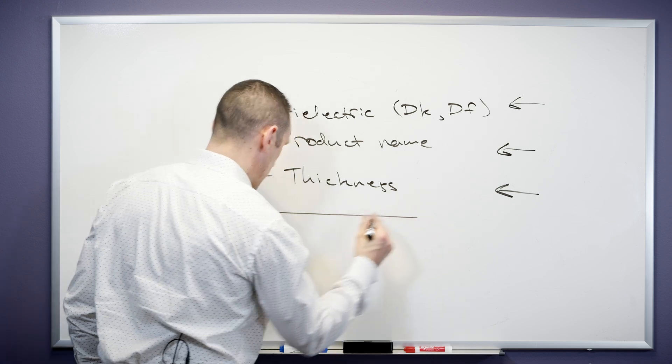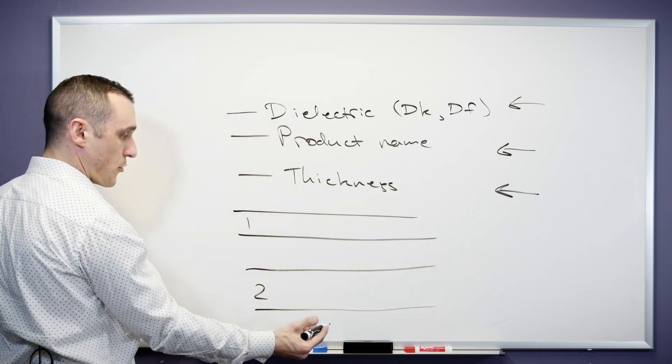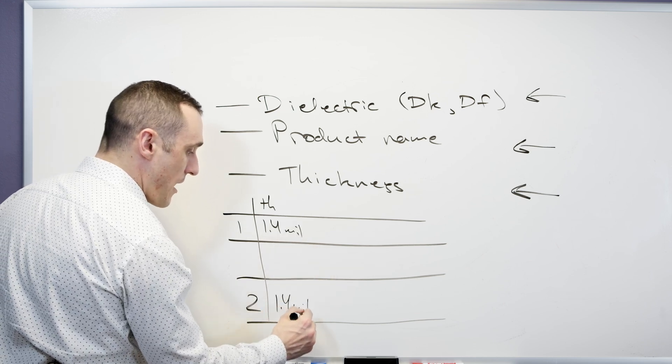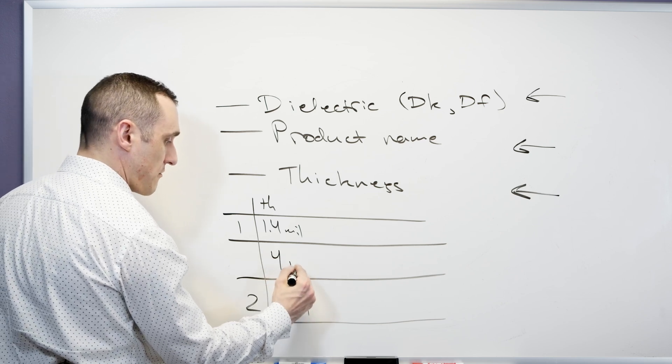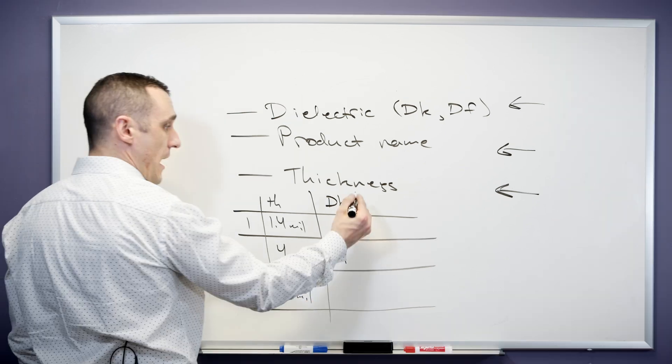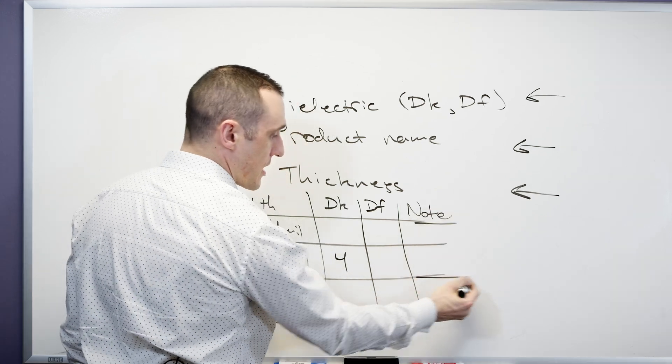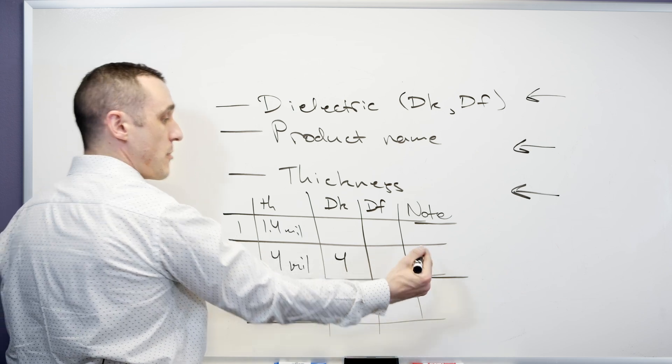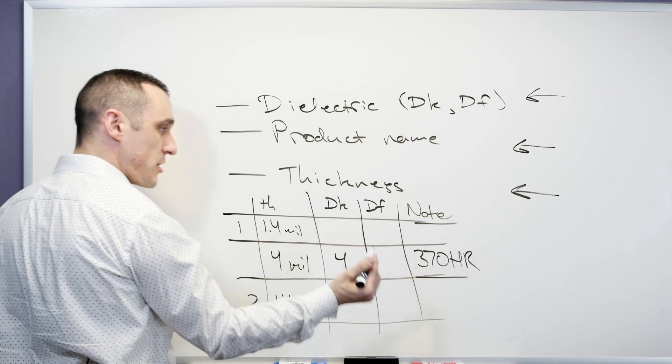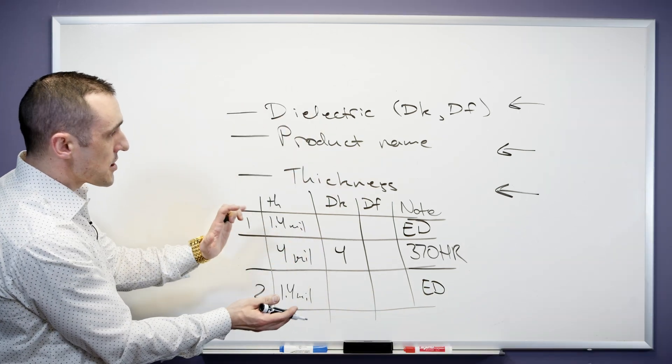That stack-up table is going to look something like this where we basically have signal layer one and then dielectric, signal layer two, dielectric and so on. We might have a thickness if it's let's say one ounce copper, this will be like 1.4 mil. Same thing here, 1.4 mil and then here you would put your outer layer dielectric thickness. Just as an example let's say it's 4 mil and then your DK value, let's say 4 for your particular product, and then you might want to include the DF. And then some note here would be essentially the type of material or the product name. Maybe this is 370HR. Here if you're looking at copper you might say electro deposited copper.